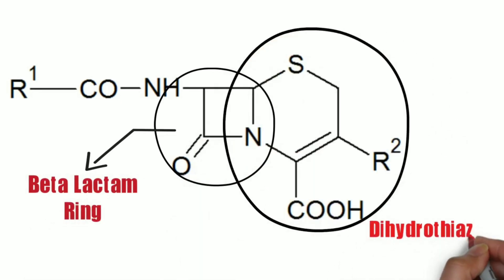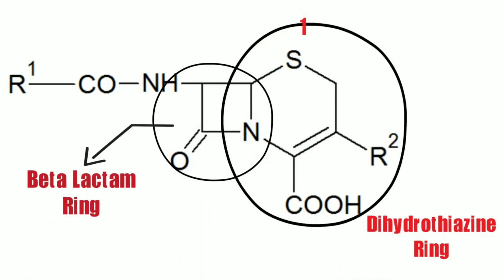If we want to number the ring, we'll start from the sulfur atom. That is 1, 2, 3, 4, 5, 6, 7, and 8.